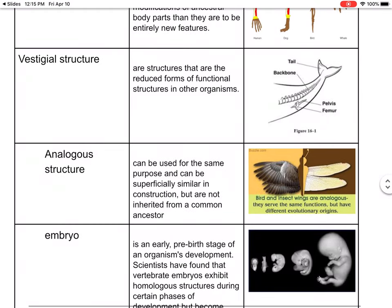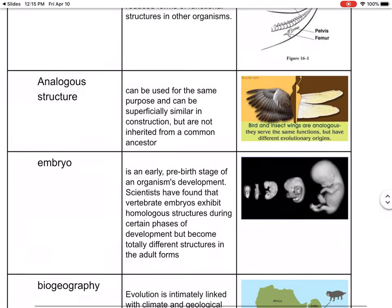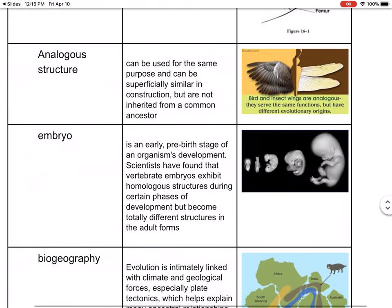Vestigial structures are structures in reduced form — a vestigial structure is just getting smaller. An analogous structure is similar in construction but not inherited from a common ancestor. For example, a bird and a butterfly have similar wings, but they didn't come from the same ancestor.